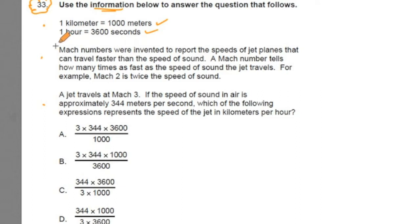Mach numbers. I never thought about mach numbers. Mach numbers were invented to report the speeds of jet planes that can travel faster than the speed of sound. A mach number tells us how many times as fast as the speed of sound the jet travels. For example, mach 2 represents twice the speed of sound. Well, I never really thought of that before, about mach numbers and the speed of jet planes and how that represents the speed of sound. But this is good information that I've got to add into my memory banks in thinking about this problem.